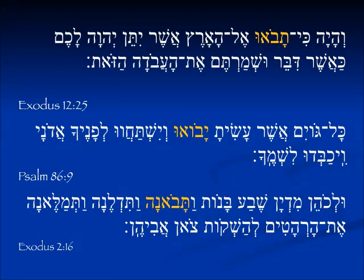The special feminine plural form appears in Exodus 2:16, speaking of the seven daughters of Jethro, called the Kohen Midian — the priest of Midian. 'Vatavona' — translated of course in the past tense by the Vav conversive — and they came. 'Vatidal'na' — same form, they're going to drop their buckets down. 'Vatimal'na' — same form, they are filling their buckets.